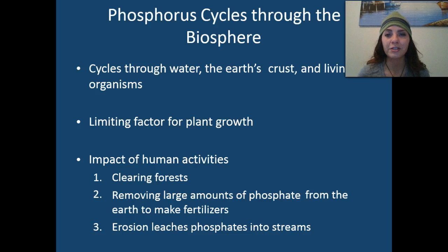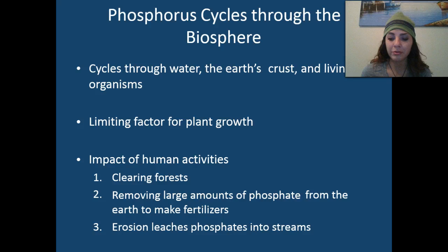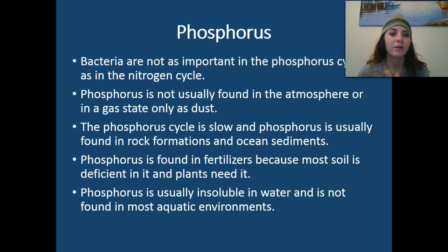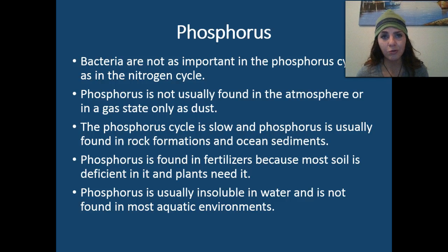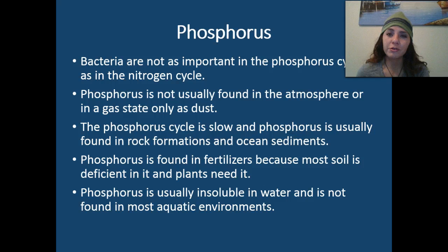Phosphates leach into our streams, our rivers, our lakes, and eventually into the ocean, which goes into all the oceanic food webs and food chains. Bacteria are not as important in the phosphorus cycle as they are in the nitrogen cycle, which we'll discuss shortly. Phosphorus is not usually found in the atmosphere or in a gas state — it's typically only found as a dust.